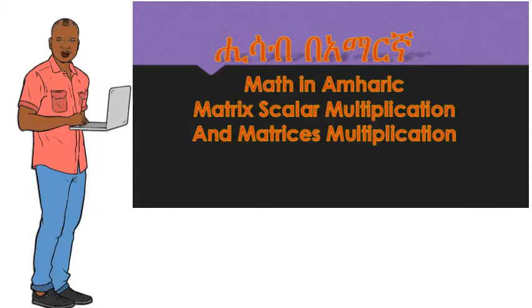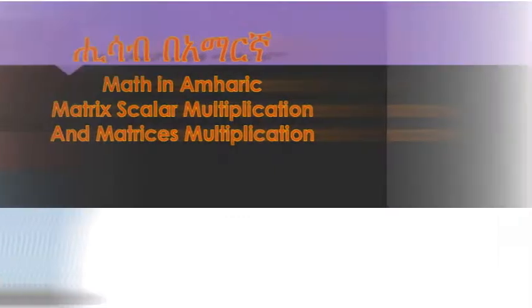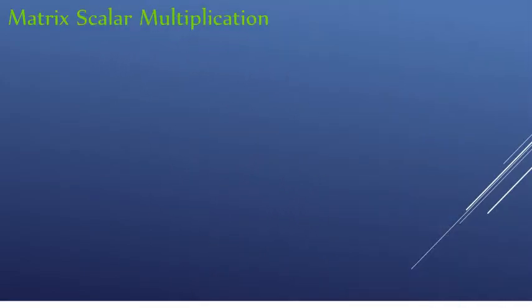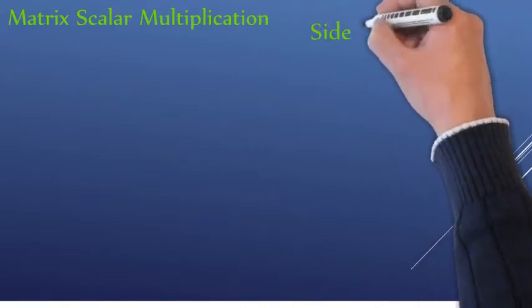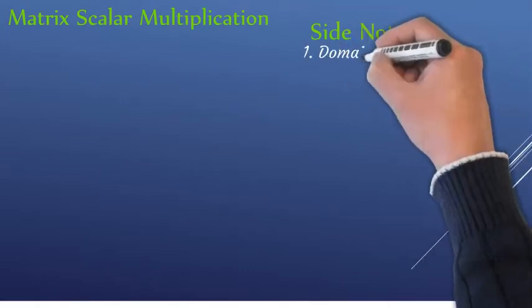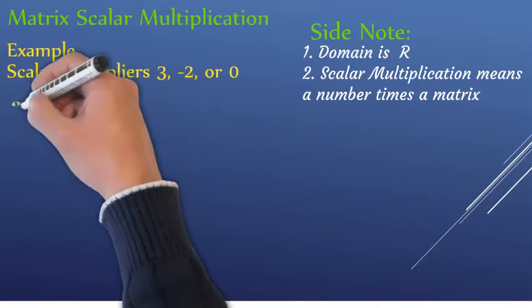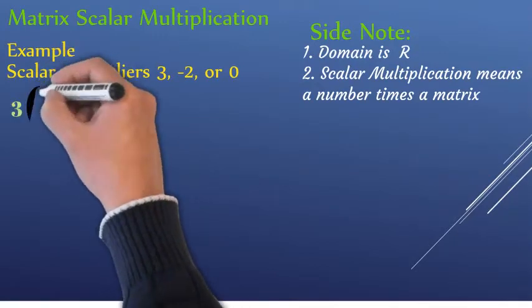The next topic will be matrix multiplication. We will cover matrix multiplication — first, matrix times a scalar, and second, matrix times a matrix. I will take some examples for this. For matrix multiplication, two side notes: side note number one, our domain is the real numbers. Side note number two is what it means to multiply a matrix by a scalar — that is, a number times a matrix.